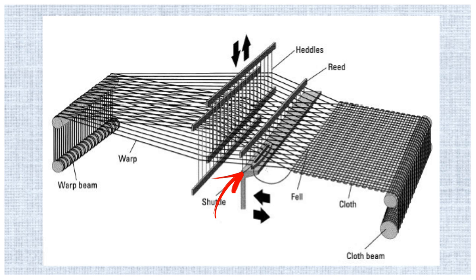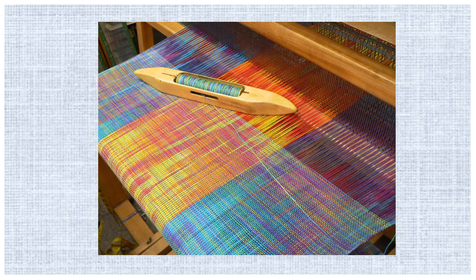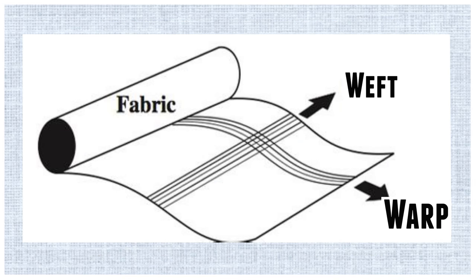On an old fashioned loom it looks a little bit like this: you've got your warp threads on the top and the bottom making a gap through which the shuttle can go through, and then they just change position up and down to make the fabric. When you get your fabric you have the warp running along it and the weft which goes from side to side, and that makes your selvedge.